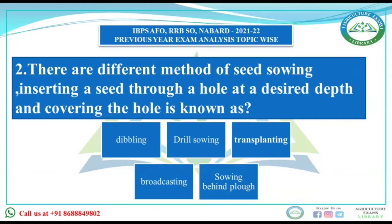In drill sowing, seeds are dropped at different depths, the soil is covered and compacted, but sowing implements are used. In transplanting, seedlings are raised in the nursery and then taken to the main field when ready. In broadcasting, seeds are randomly sown when available in abundant quantity. In sowing behind the plug, the furrow is opened by the plow, seeds are dropped, and the same furrow is closed when the next furrow is opened. The answer to the question is dibbling.